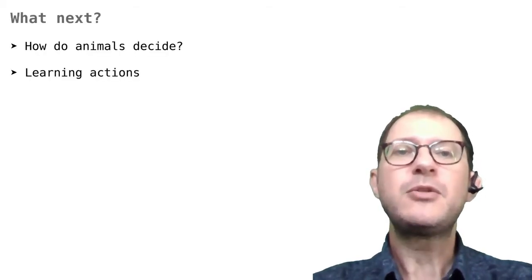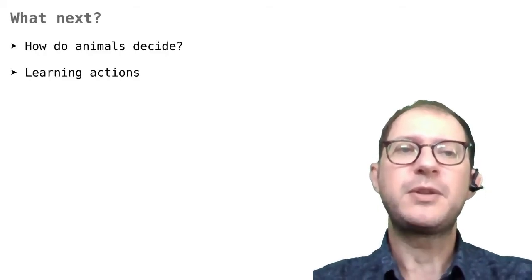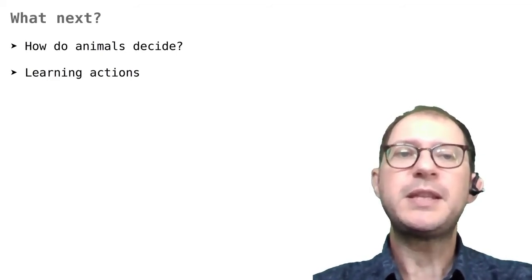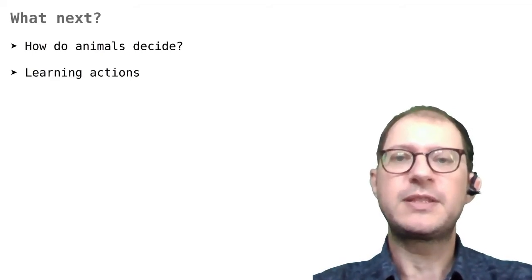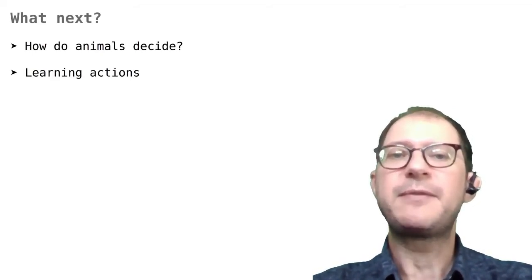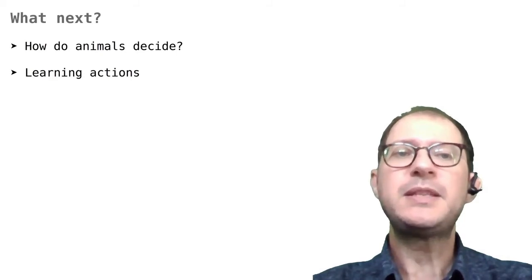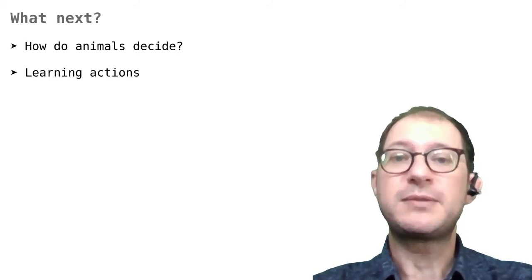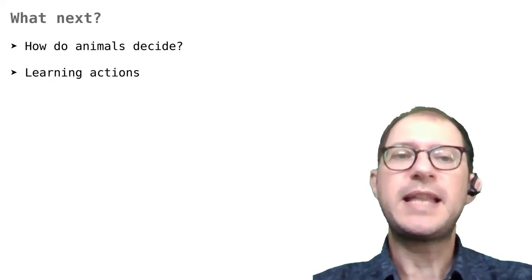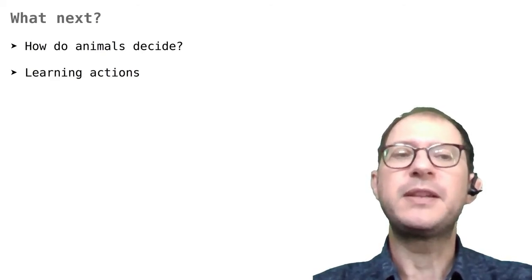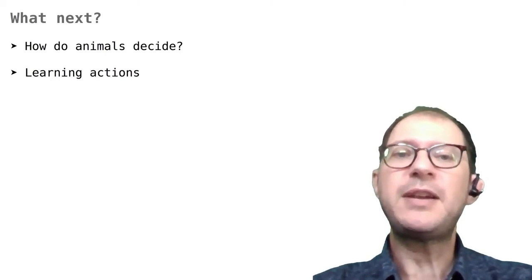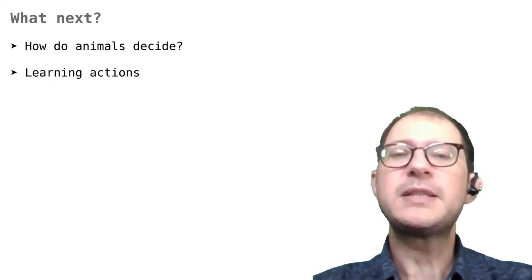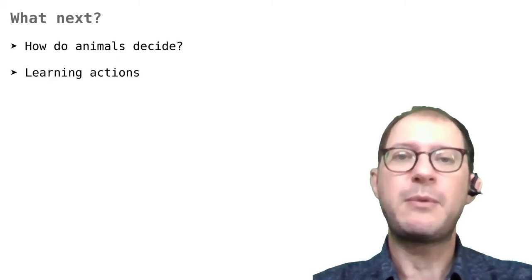This lesson concludes our block of three lessons on the basics of the Rescorla-Wagner model. We have seen that the model successfully mimics animal learning in a number of interesting situations. There is more to RW than I have covered in these lessons, but this is all I will say for now. I want to mention just that the model is not always right. Sometimes it predicts that animals will learn something different than what they actually seem to learn. So it's always good to remember that RW is a useful theory, but it's not a perfect representation of how animals learn.